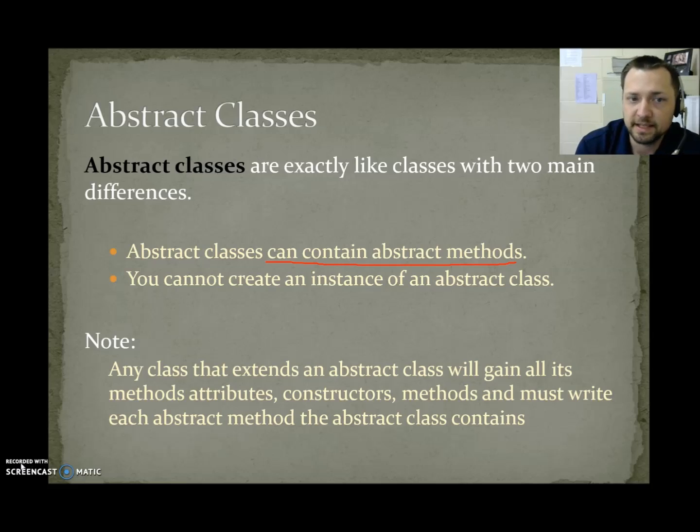Abstract classes are exactly like classes with two main differences. Abstract classes can contain abstract methods, but you cannot create an instance of an abstract class. Note: any class that extends an abstract class will gain all of its methods, attributes, constructors, but must write every abstract method the abstract class contains.